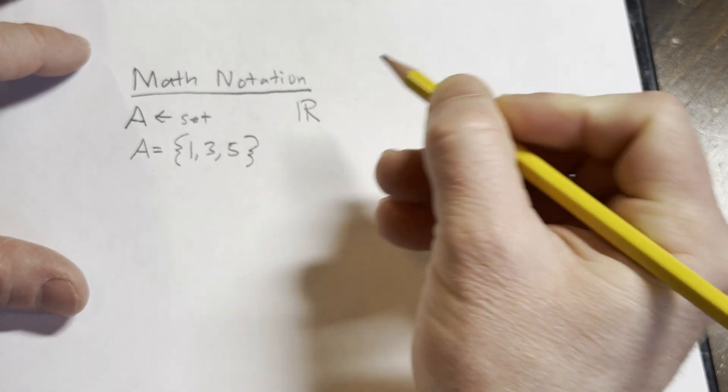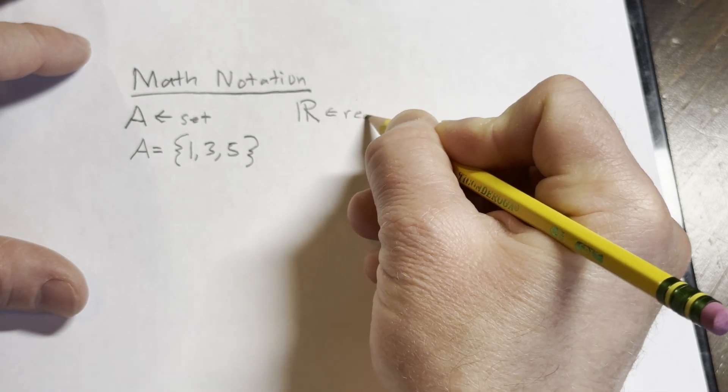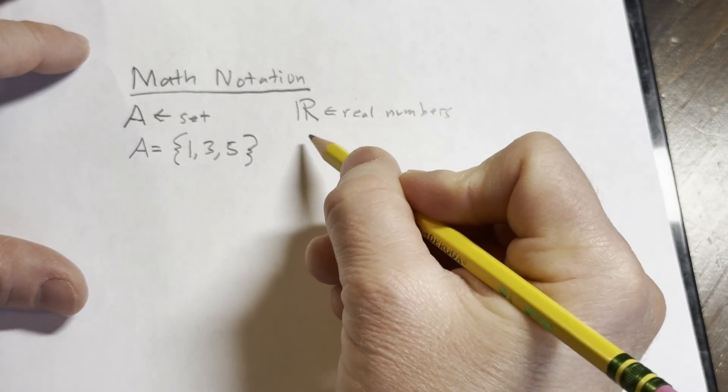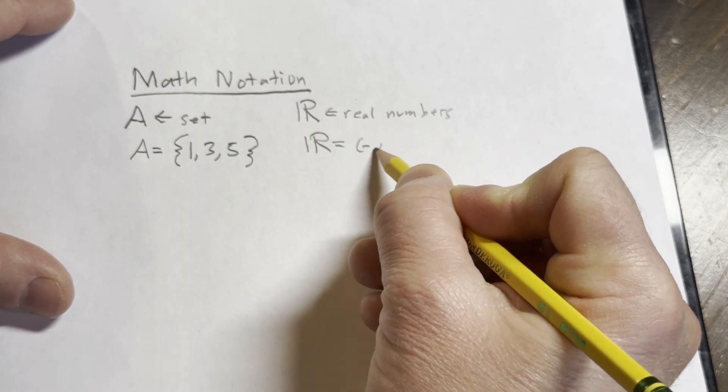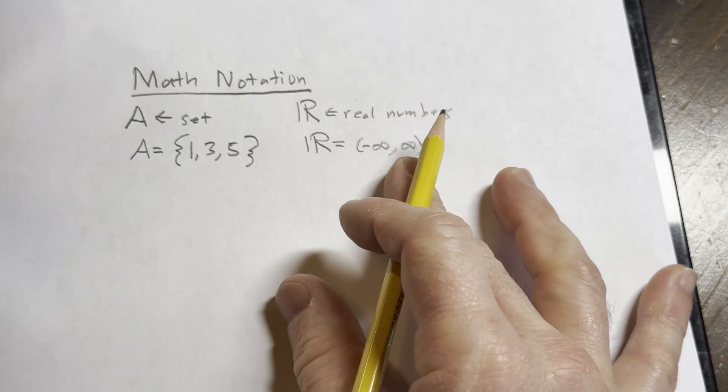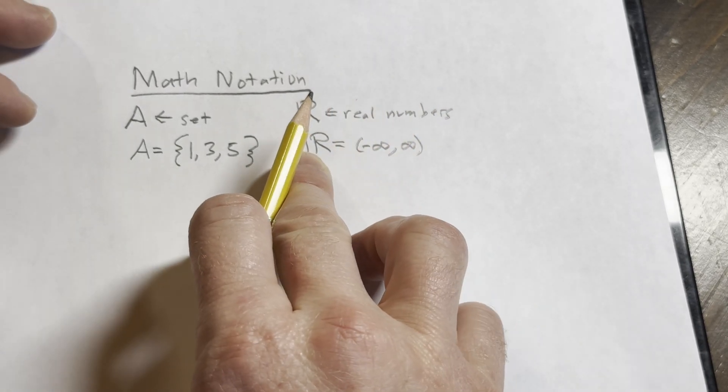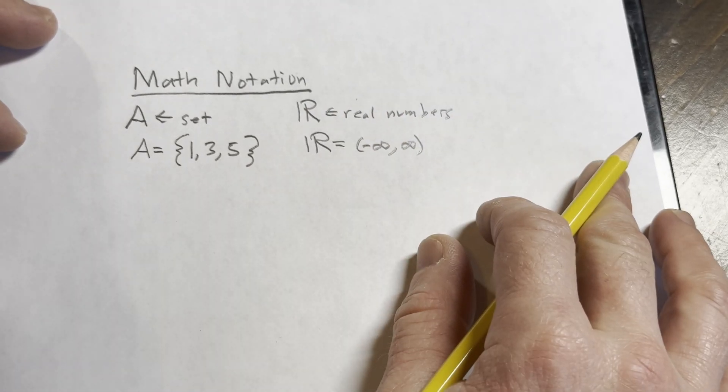So for example here R, this is the set of real numbers. Real numbers. You might be familiar with it in this fashion. R is the interval from negative infinity to infinity. So you may have seen that perhaps in algebra or any calculus course. So this is just a different way to write. This is the interval notation for that set.